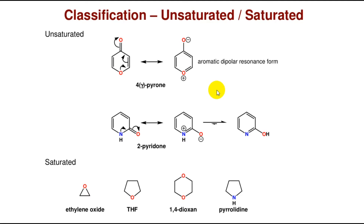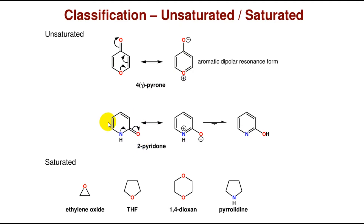A heterocyclic substance may be saturated or unsaturated. Unsaturated heterocyclics may have aromatic resonance structures. For example, gamma-pyrone can adopt an aromatic dipolar resonance form. 2-Pyridone is convertible to an aromatic dipolar resonance form that is stabilized, and 2-hydroxypyridine is isolated as an unsaturated heterocyclic compound.